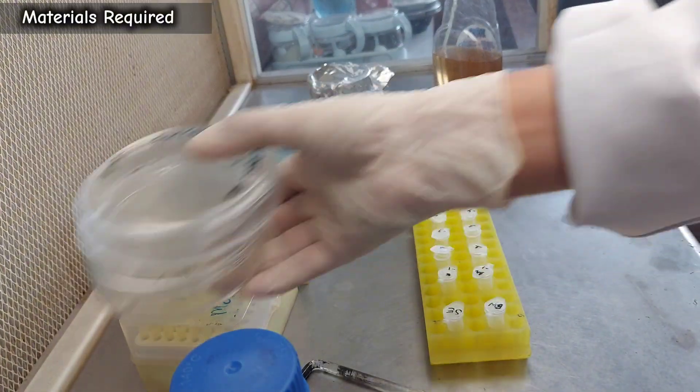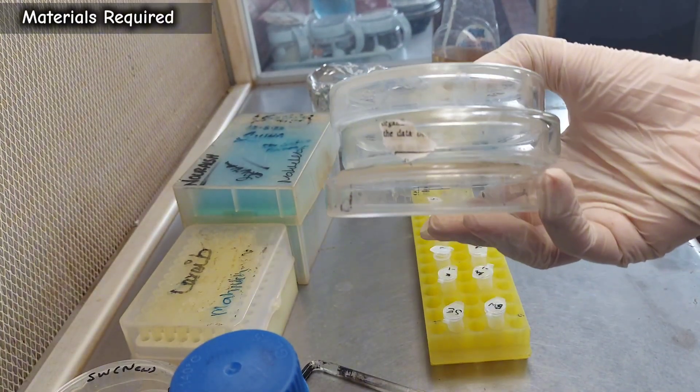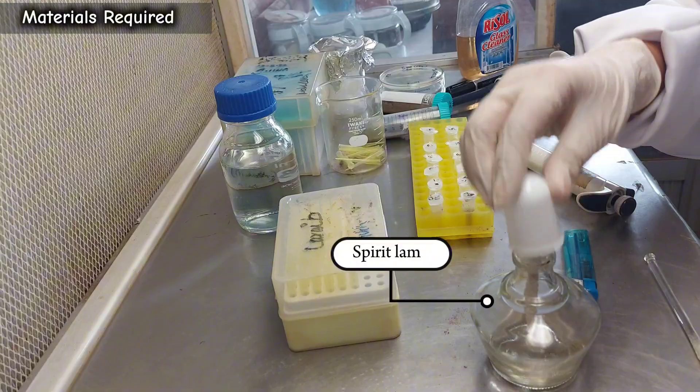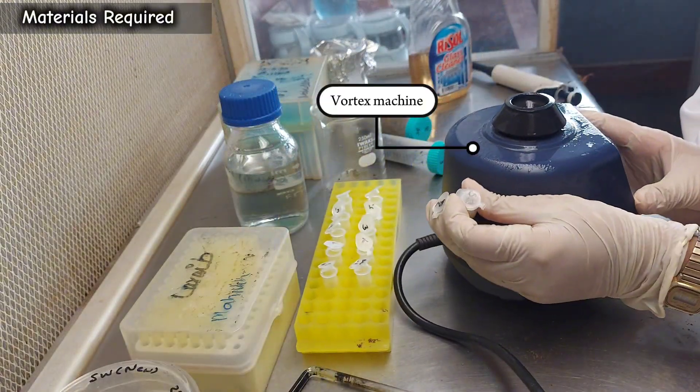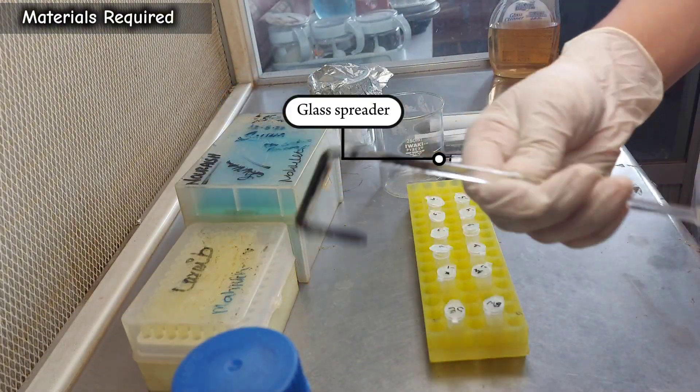Poured nutrient agar plates, a spirit lamp, a vortex machine, and a glass spreader.